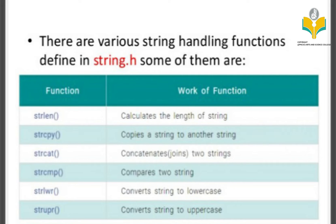To summarize: strlen is used to calculate the length of a string; strcpy is used to copy a string into another string; strcat is used to combine two strings by concatenation; strcmp is used to compare two strings; strlwr is used to convert into lowercase; and strupr is used to convert into uppercase. These are the main string manipulation functions in C.